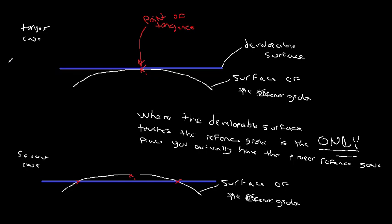Think about this in context of the developable surface shapes we discussed. When you have the cylindrical case you end up with parallel perpendicular lines; when you have the planar case you have a point with radials out and concentric circles outward. What I'm talking about here is the idea of exaggerated scale and compressed scale.